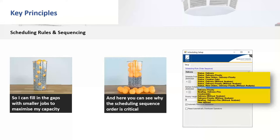If we do the smaller jobs first — scheduling those first — they fill up half our capacity, and then the longer jobs go afterwards, meaning half of those longer-running jobs have no capacity left to be scheduled. This is controlled by the scheduling rule you select, and there are a number of different options. Neil, our scheduling specialist, will now talk through the detail of some of the available options, and we'll also cover them in the scenarios towards the end of the presentation.